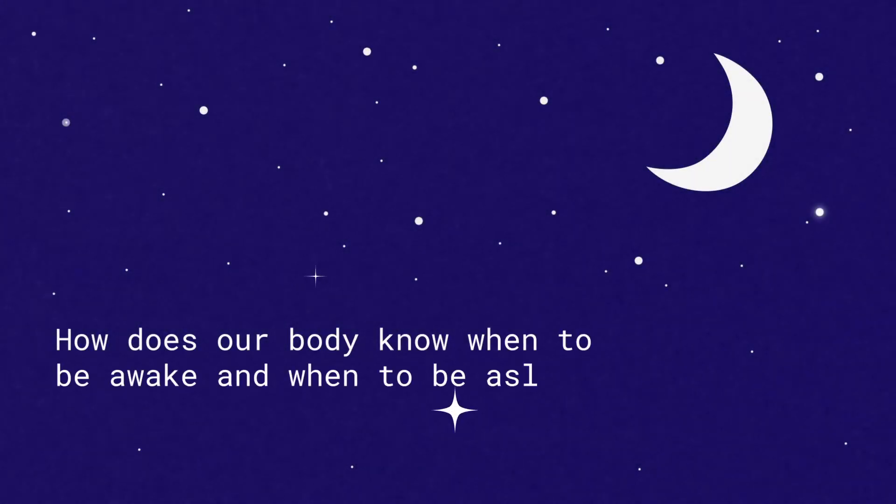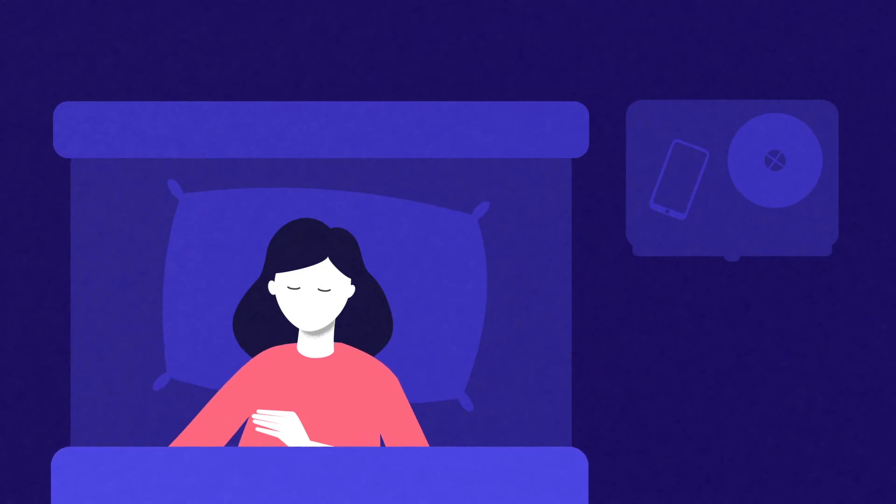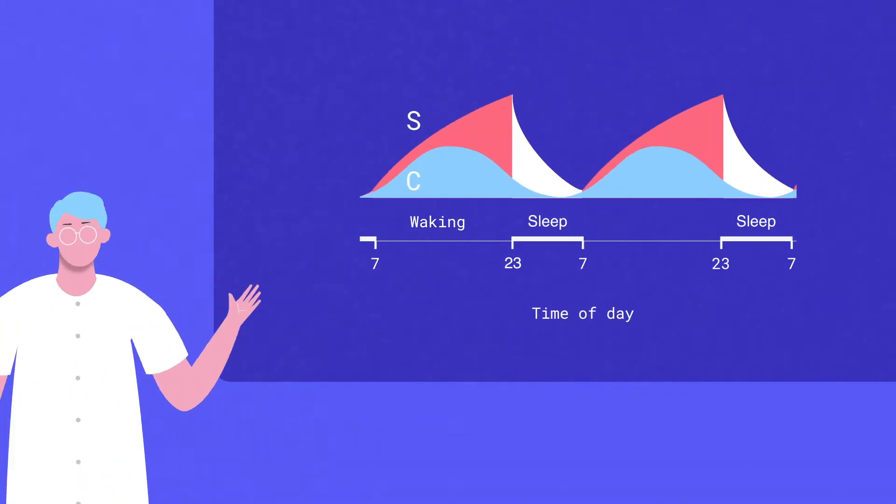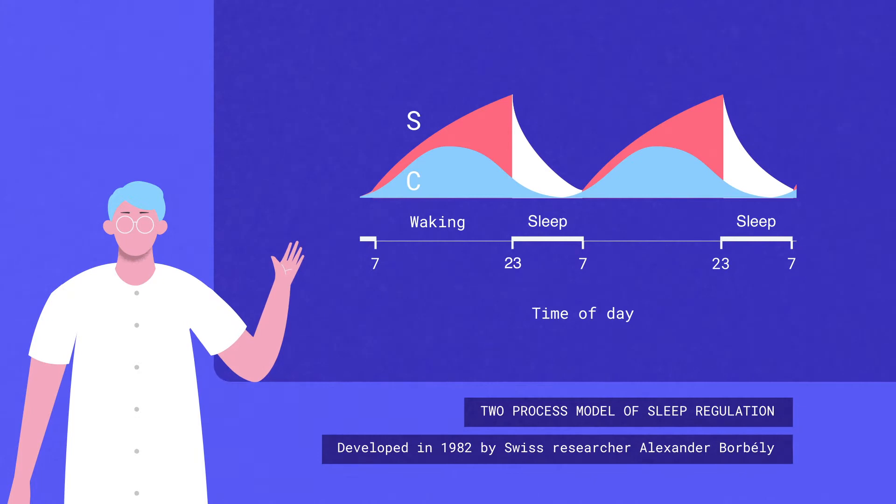How does our body know when to be awake and when to be asleep? We spend around one-third of our lives sleeping, but being able to sleep well is actually quite a complicated process. Scientists therefore developed the two-process model of sleep regulation to help explain how sleep and wake are controlled.